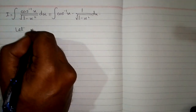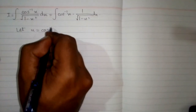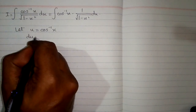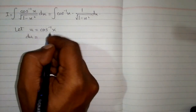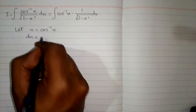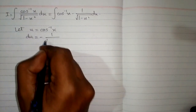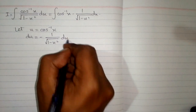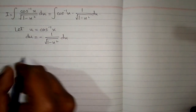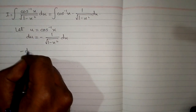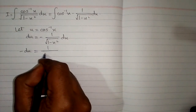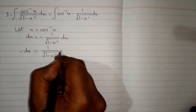Now suppose that u is equal to inverse cosine of x, so the differential du is equal to the derivative of inverse cosine x, which is minus 1 upon square root of 1 minus x square, multiplied by dx. Multiplying both sides by minus, we have minus du equal to 1 upon square root of 1 minus x square dx.